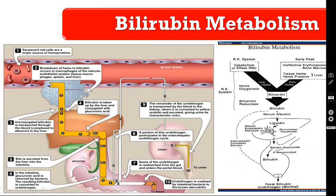Non-conjugated bilirubin must join with serum albumin to be transported to the liver. In the liver, it is converted into conjugated bilirubin by joining with glucuronic acid, facilitated by the enzyme glucuronyl transferase. The unconjugated bilirubin is thus converted into conjugated bilirubin, which is water soluble. This conjugated bilirubin is then excreted into the biliary canaliculi.